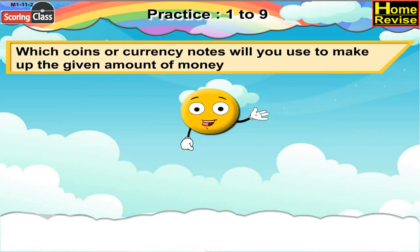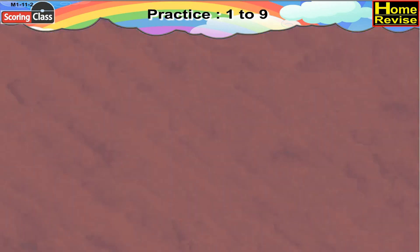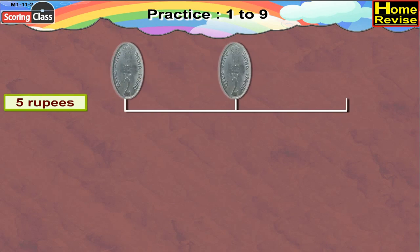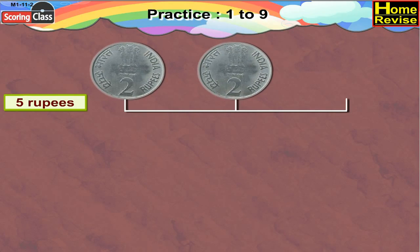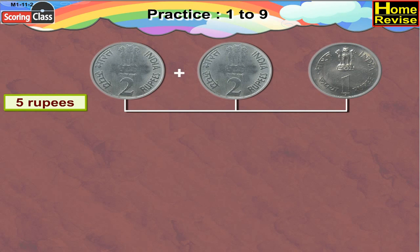Which coins or currency notes will you use to make up the given amount of money? Here we have to make Rupees 5. For that we can take 2 two-Rupee coins and 1 one-Rupee coin. Now 2 Rupees plus 2 Rupees is 4 Rupees, plus 1 makes it 5 Rupees.